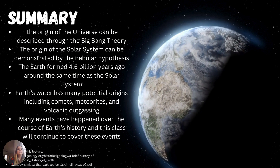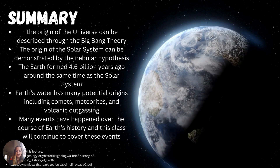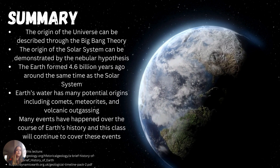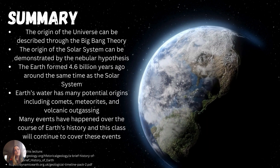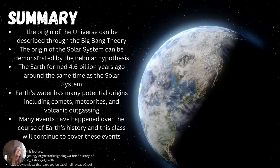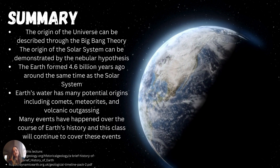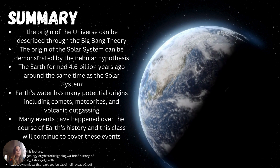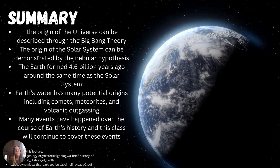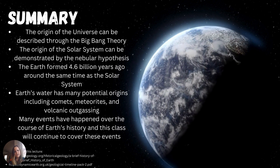Just as a summary: the origin of the universe can be described by the Big Bang Theory. The origin of the solar system is demonstrated by the nebula hypothesis and the formation of stars. The Earth formed 4.6 billion years ago, around the same time as the solar system. Earth's water could be from comets, meteorites, or volcanic outgassing, or a combination of all three. There have been many events over the course of Earth's history, and we will continue to cover all of these topics in class.